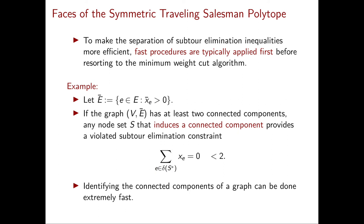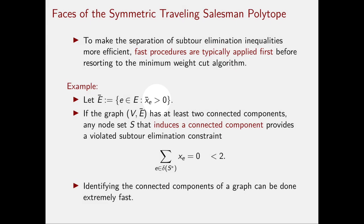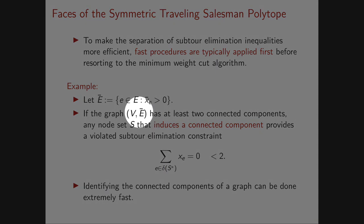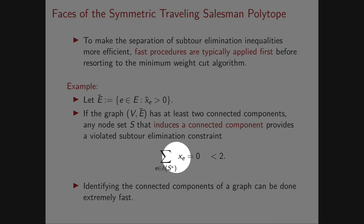Here is an example of such a heuristic. Define the subset of edges Ē corresponding to edges with x̄_e strictly greater than zero. In linear time you can check if the graph (V, Ē) is connected. If it's not connected, let S* be a set of nodes that induces a connected component — such an S* immediately gives a violated subtour elimination constraint, since the sum of x̄_e for e in delta(S*) equals zero, which is clearly strictly less than 2.